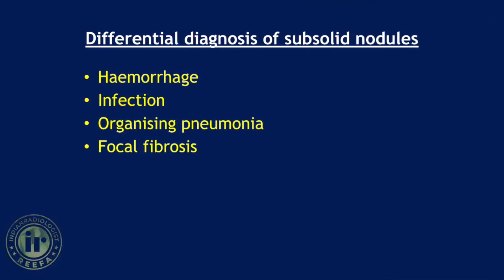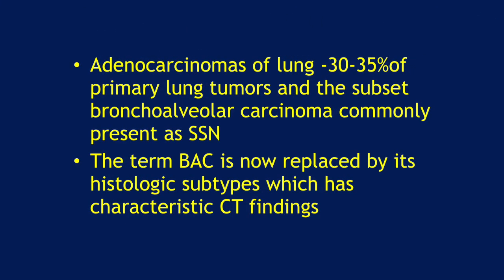There are quite a few differentials for sub-solid nodules: hemorrhage, infection, organizing pneumonia, and focal fibrosis all have the appearance of a sub-solid nodule. Adenocarcinoma of the lung, which accounts for 30 to 35% of primary lung tumors, and the subset bronchoalveolar carcinoma, commonly present as sub-solid nodules.